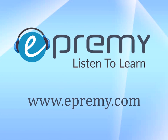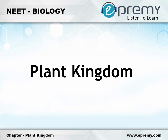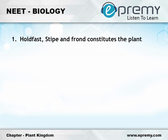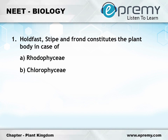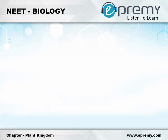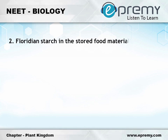This is brought to you by ePremie.com. Multiple choice questions in Plant Kingdom. Question number one: whole thallus type and frond constitutes the plant body in case of option A Rhodophyceae, option B Chlorophyceae, option C Phaeophyceae, option D all of these. The answer is option C Phaeophyceae.